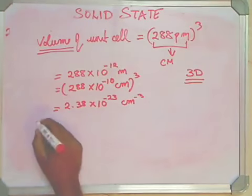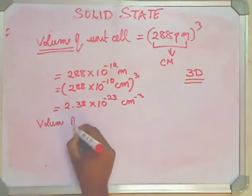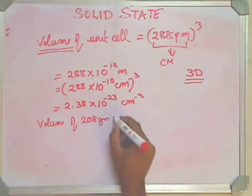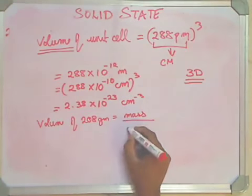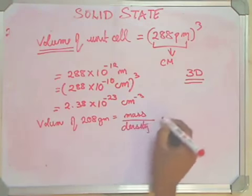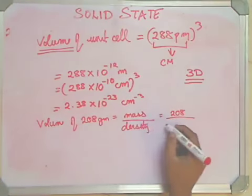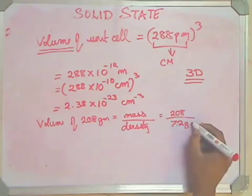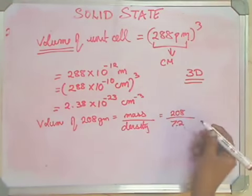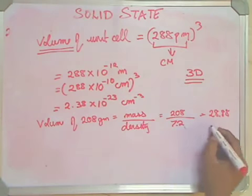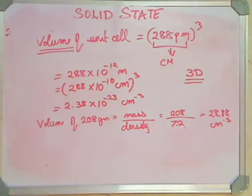Now I have the volume of the unit cell. It was previously given in picometer, I've converted this to centimeter because it's easier to calculate. Next thing I'm going to do is find the volume of 208 grams of this element. To calculate the volume, you use mass divided by density. This gives you 208 divided by 7.2, which should give you 28.88 centimeter cube.